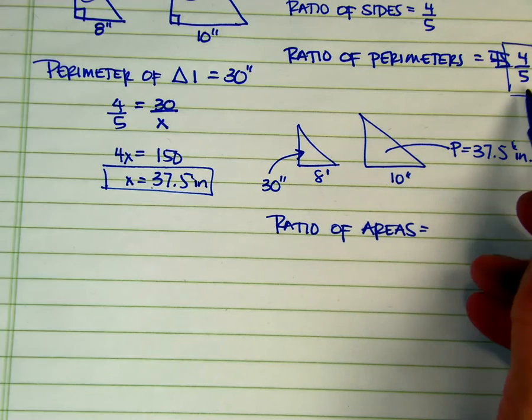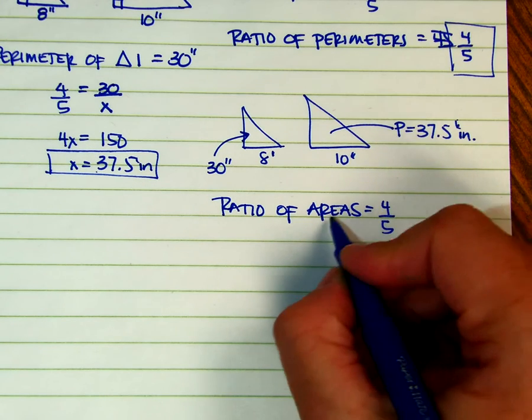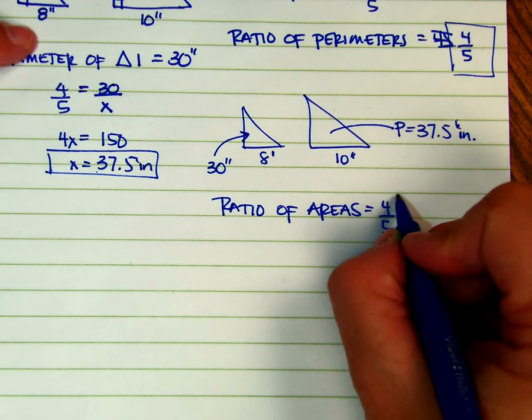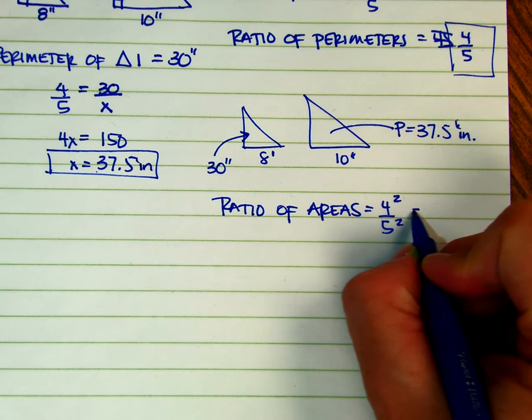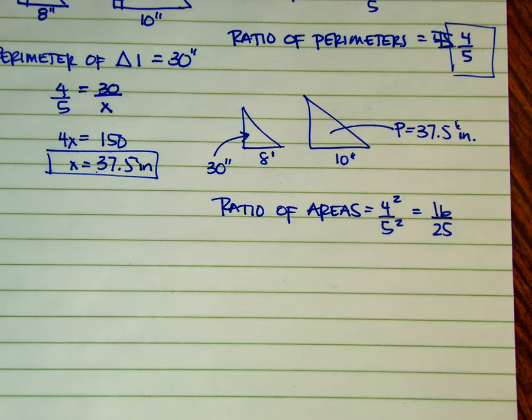So if the ratio of the perimeters is 4 fifths, then I know that there is a relationship of squared. So I need to square both of those, the numerator and denominator, and get 16 25ths.